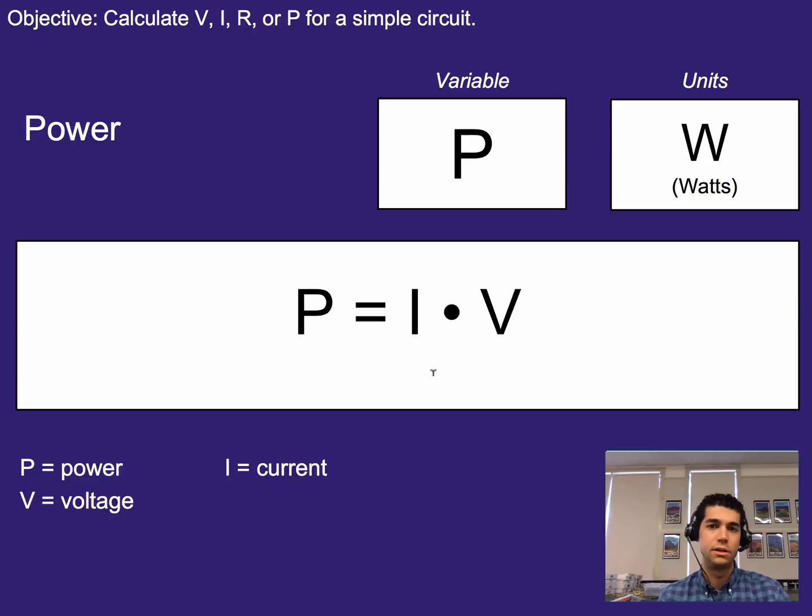Now with circuits, power is going to equal current times voltage, and we'll break that down a little bit more in a second, but know that power equals current times voltage. There are also two other ways we can write this by combining it with Ohm's law, where power equals current squared times resistance, or power equals voltage squared over resistance. Both of those are on your equation sheet, but we're not going to list them here today.